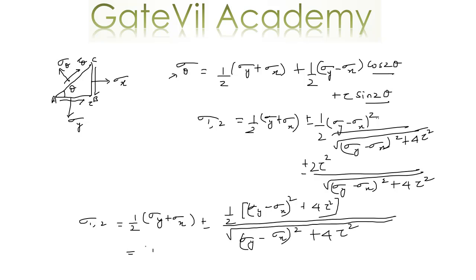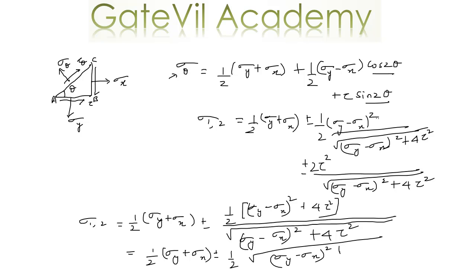This reduces to: sigma 1,2 = half of (sigma y + sigma x) ± half times the square root of [(sigma y − sigma x)² + 4τ²]. This is the expression for principal stress. On addition we get one principal stress, and on subtraction we get the other.